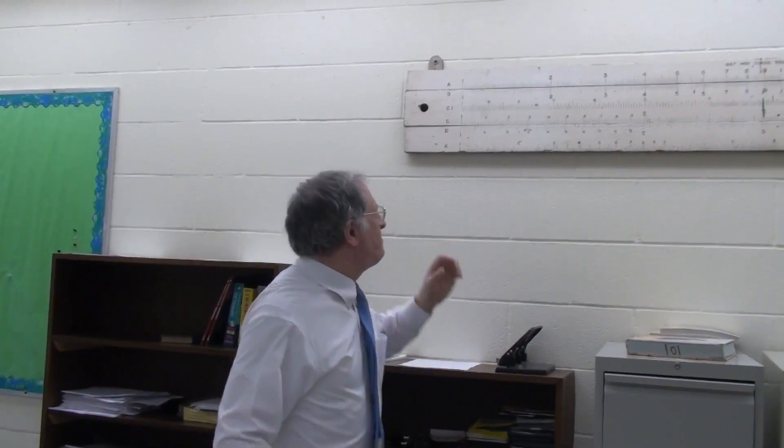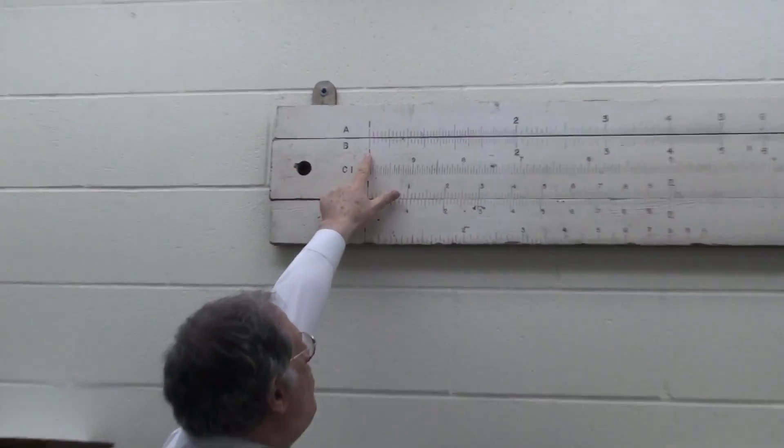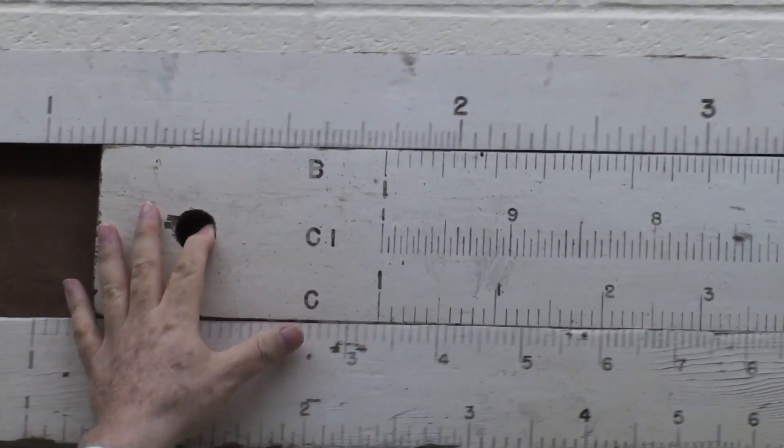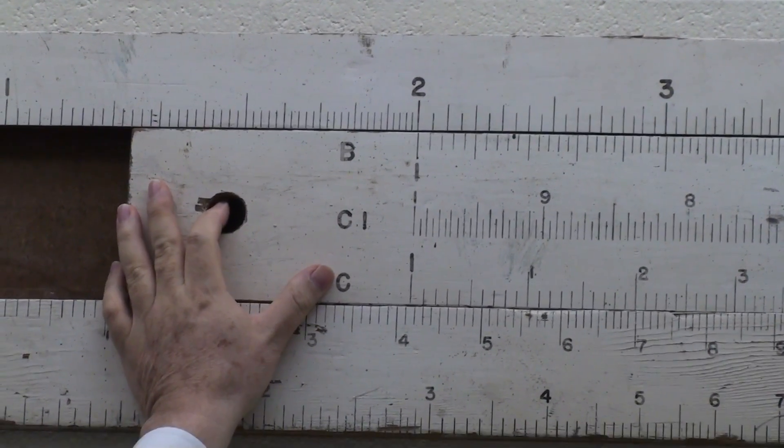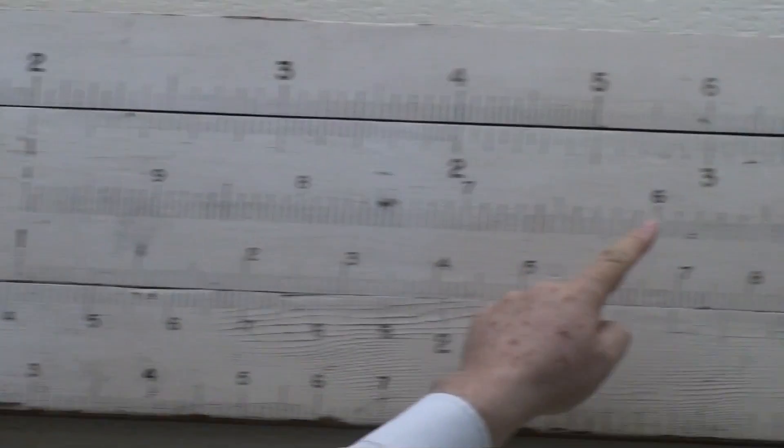Suppose I want to multiply 2 times 3. You slide the 1 right here under the 2, I've got the 1 under the 2 right there, and then you go to 3 and right above the 3 is the answer 6.